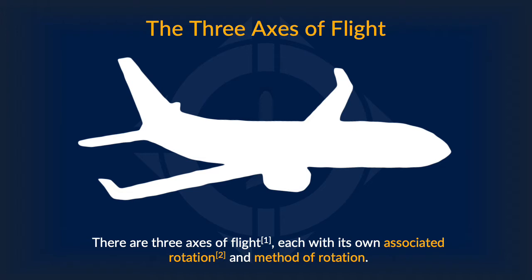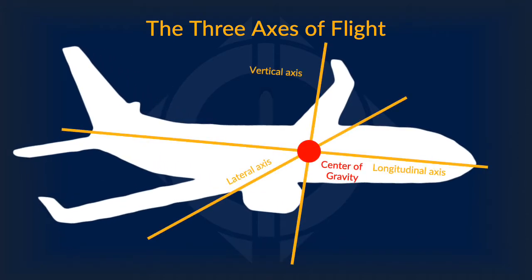Let's start off with what exactly are the axes of flight. There are three axes of flight, and they each have their own associated rotation as well as the method of rotation. We can see a master sheet of all the axes — we'll be going through them one by one. Note that each of them intersects the center of gravity. This is because of a fundamental principle of physics, where rotation has to happen about the center of gravity.